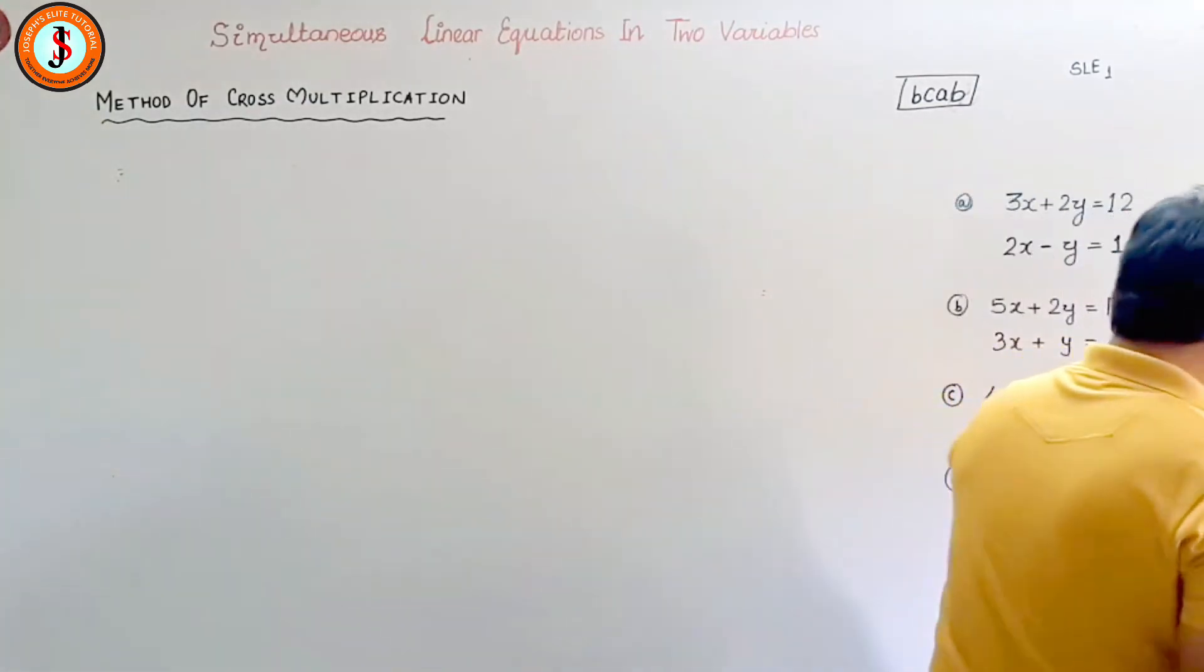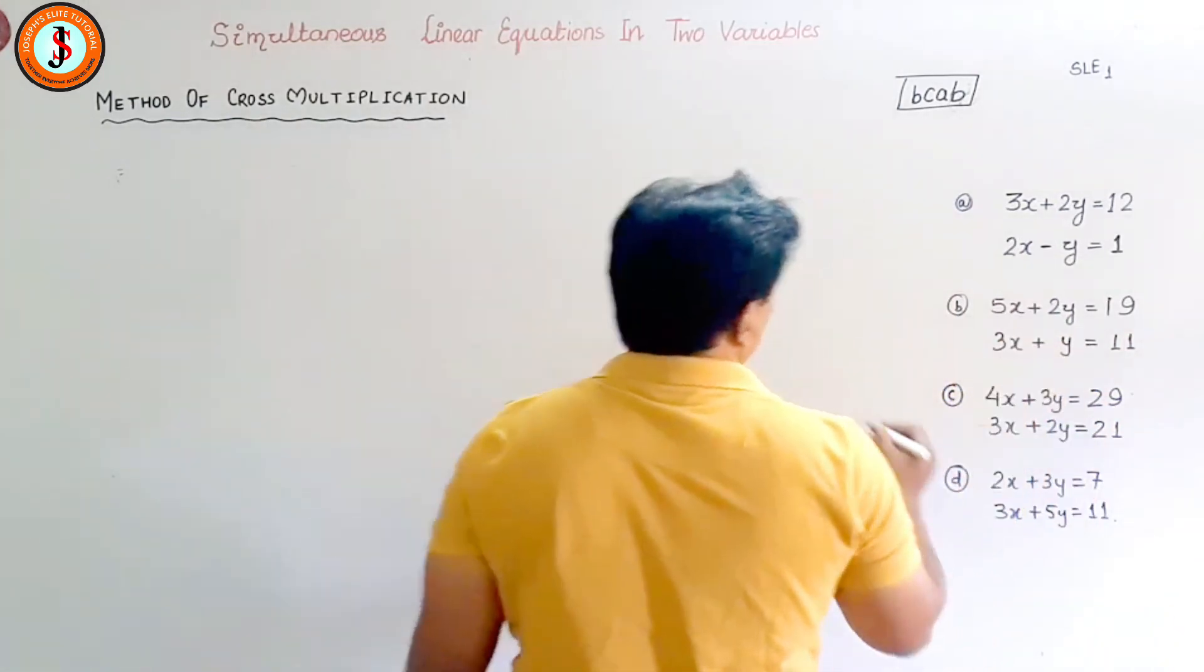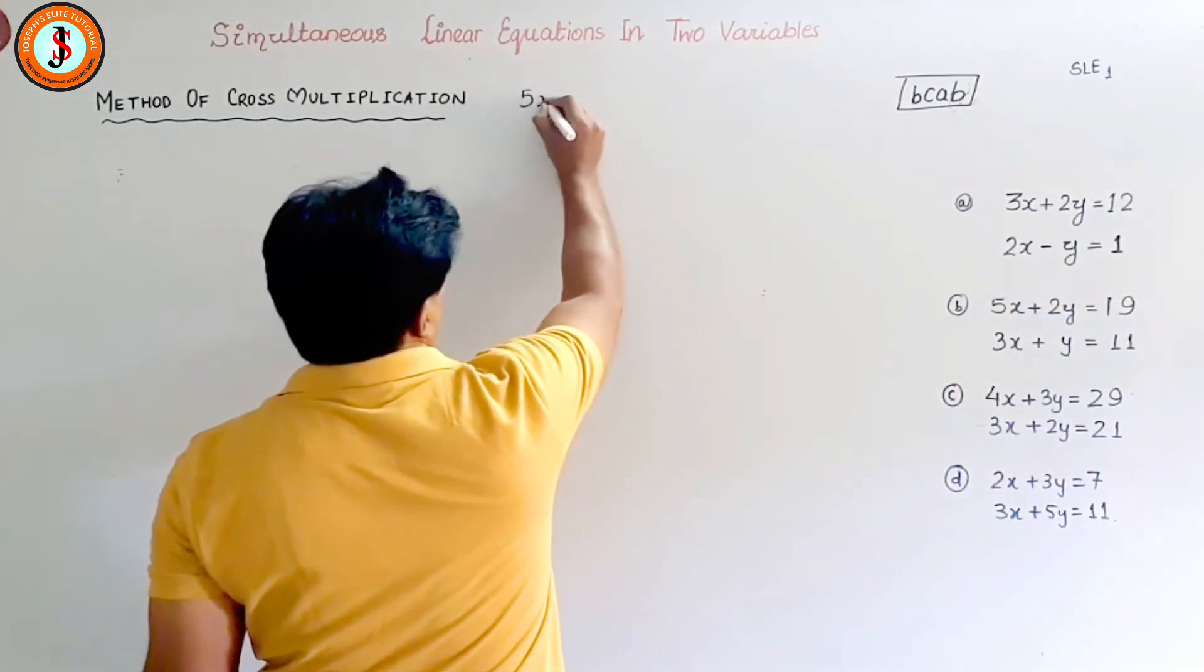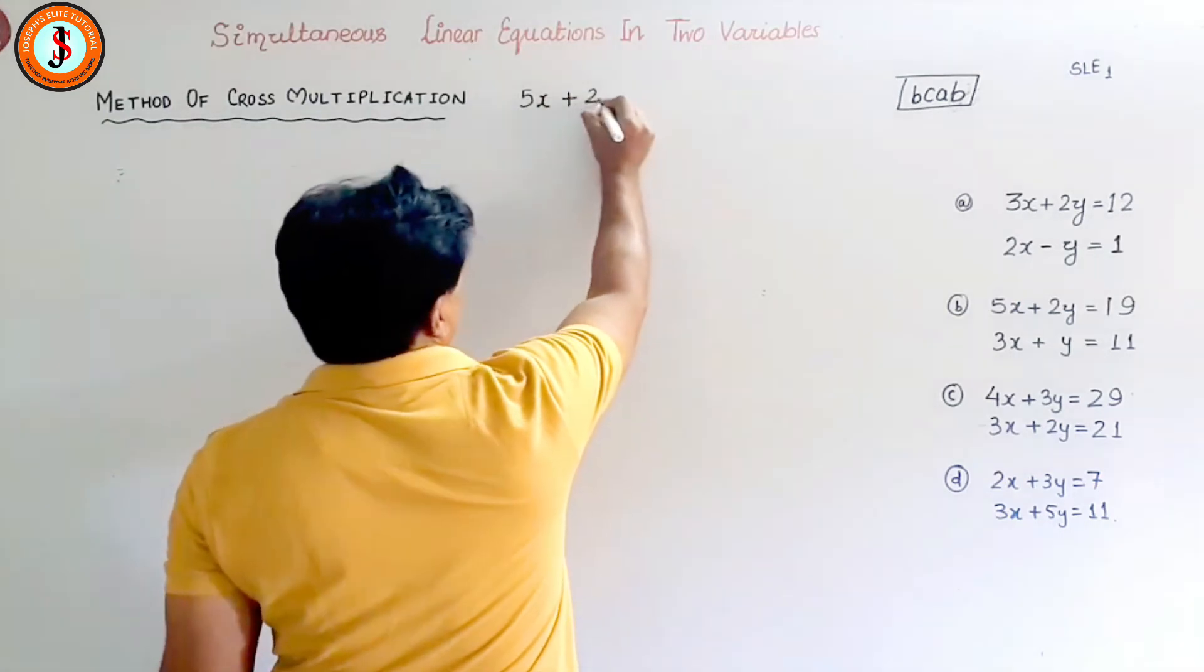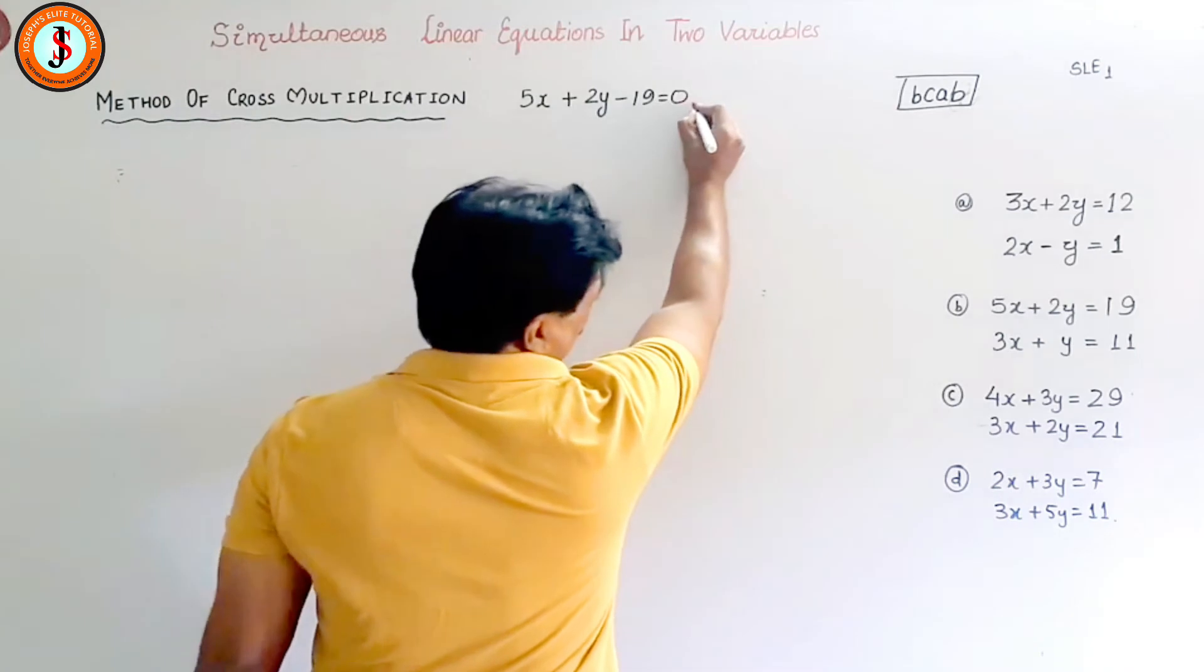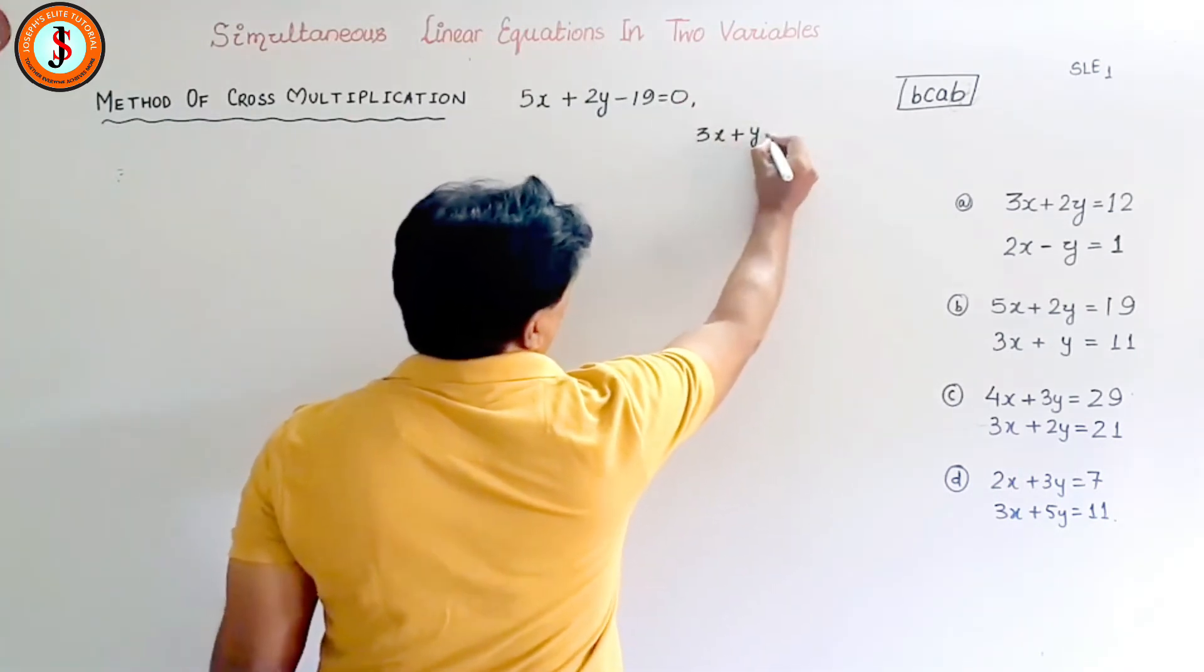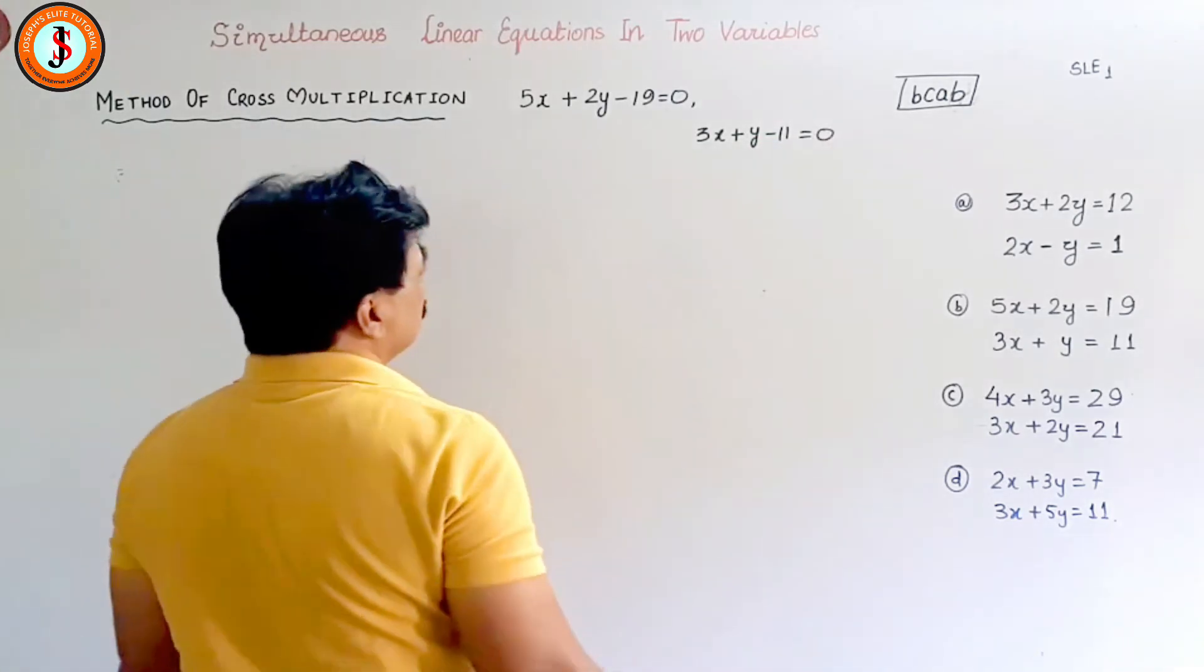Let us get involved. So we know this now, so we go a little faster. We try to do which one should we do. We do this one. Now we write it in a nice way. We write 5x plus 2y minus 19 is equal to 0, and 3x plus y minus 11 is equal to 0. These are the two equations.